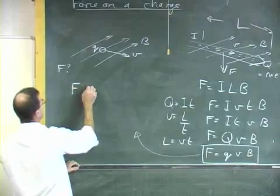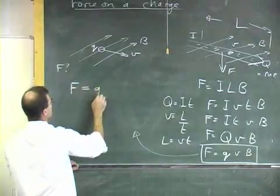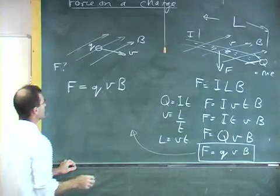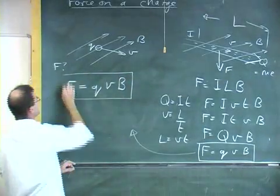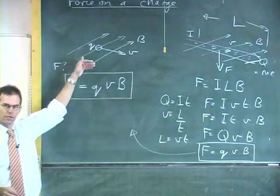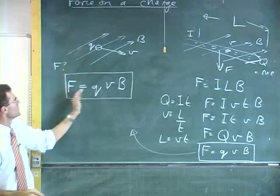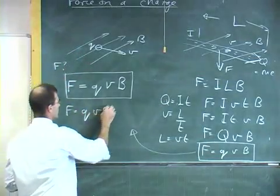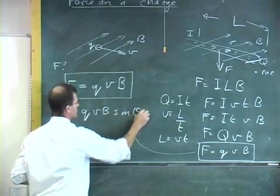That the force on a single charge is equal to q, the charge, times its speed, times the magnetic field that you've got. If they're at right angles. If they're not, if the charge is moving in at a different angle, you would just have to take the component. So you would end up with F equals q v B sine theta.